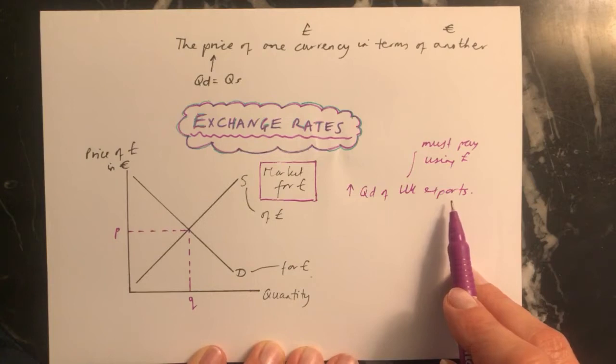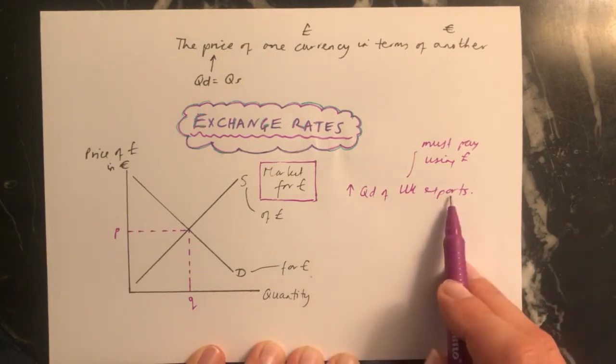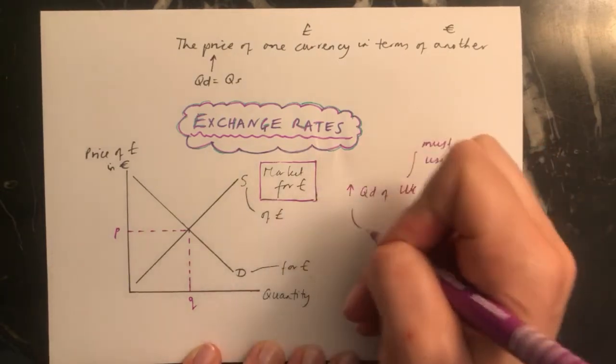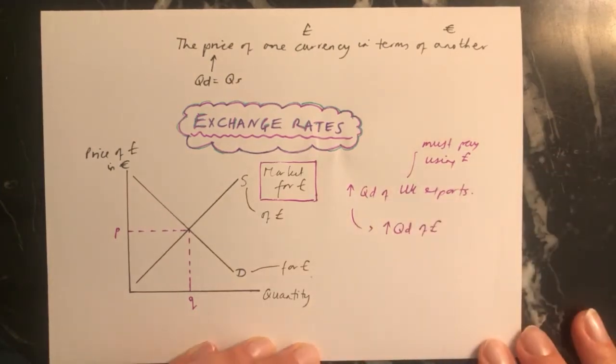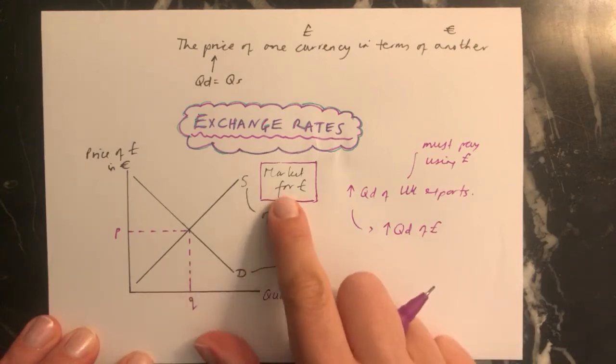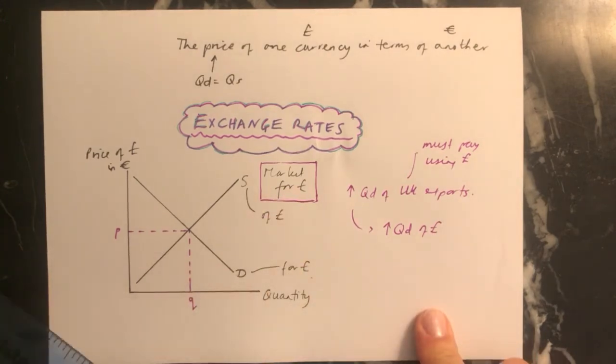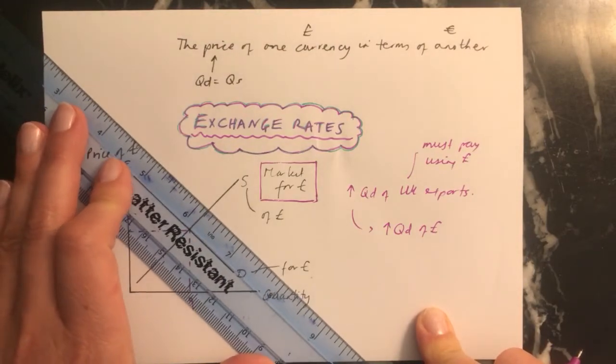So they turn up with their euros and they buy lots of pounds. So if we have an increase in the quantity demanded of UK exports, more people abroad want to buy things from the UK, this will mean that there will be an increase in the quantity demanded of pounds. And you know already that if you have an increase in quantity demanded, remember, this is the market for pounds, that shifts the demand curve to the right. So it's a parallel shift to the right like this.